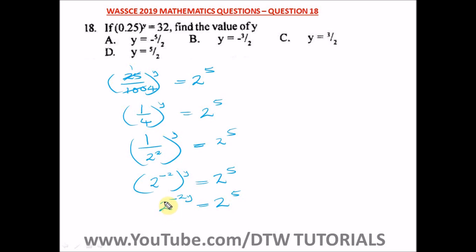We cancel out, and we are left with minus 2y is equal to 5. From here we can get our y by dividing both sides by minus 2.